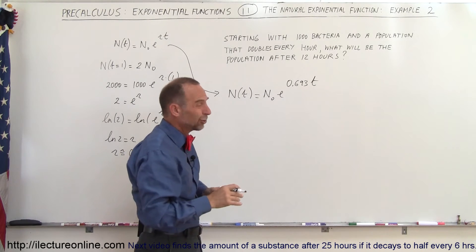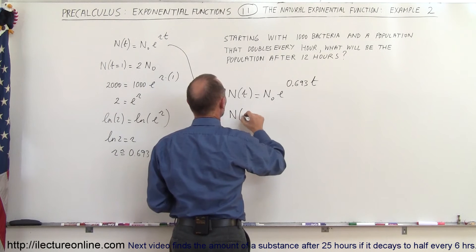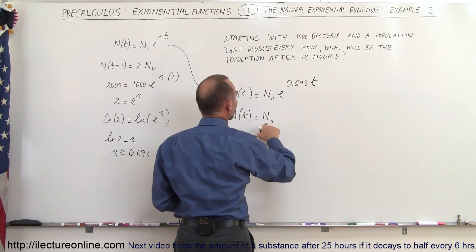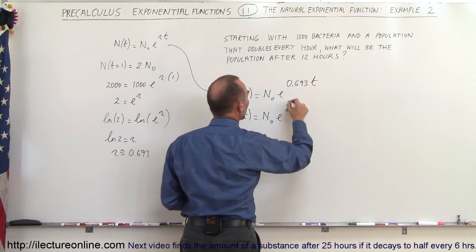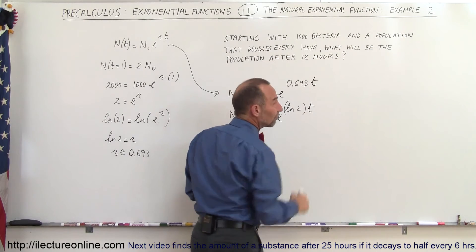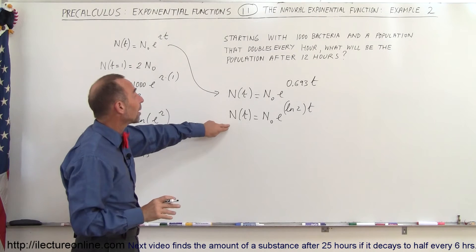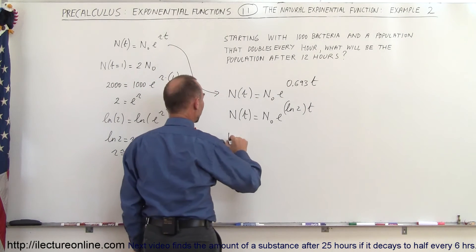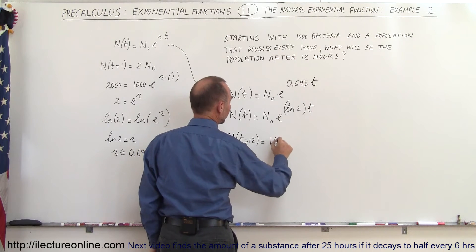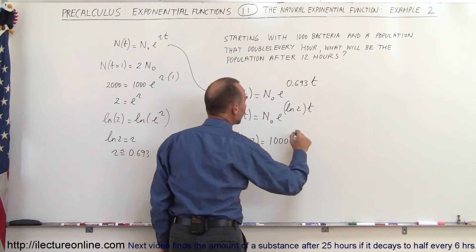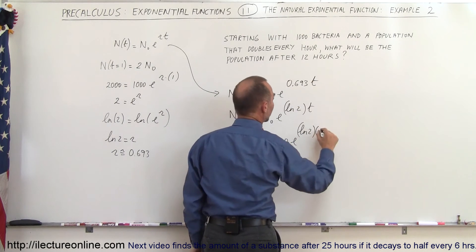We can now plug that back into the original function. The number as a function of time equals 1,000 times e to the 0.693 times time. For an exact result, we write N(t) = 1,000 times e to the natural log of 2 multiplied by time. Now we find the population after 12 hours: N(12) = 1,000 times e to the natural log of 2 times 12.